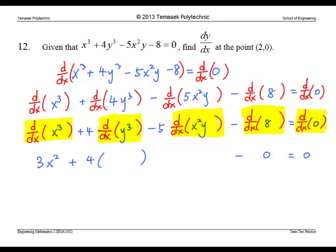However, y cubed differentiated with respect to x is 3y squared times dy/dx by implicit differentiation. And x squared y needs product rule. So, we need to evaluate d/dx of x squared and d/dx of y. d/dx of x squared is 2x and d/dx of y is simply dy/dx.